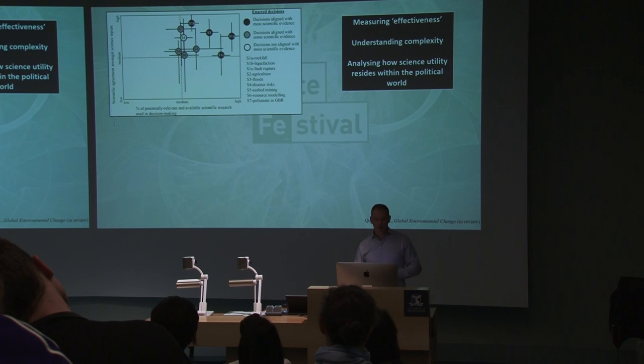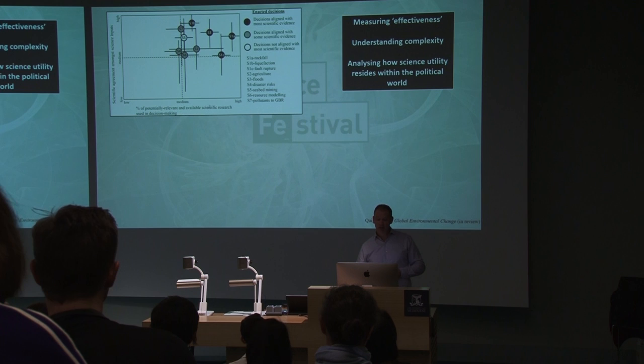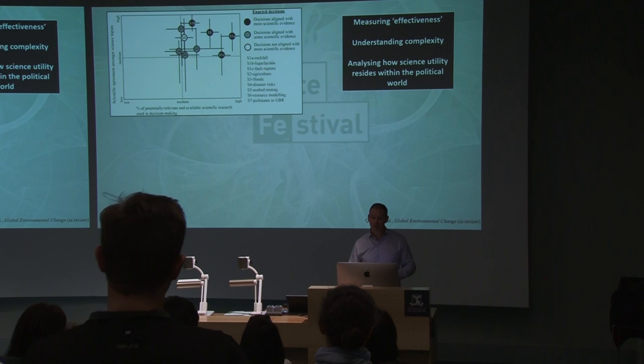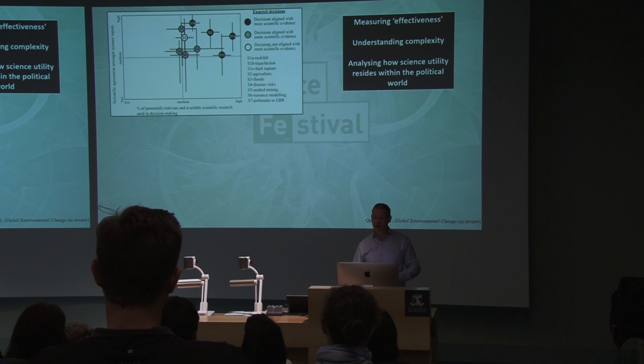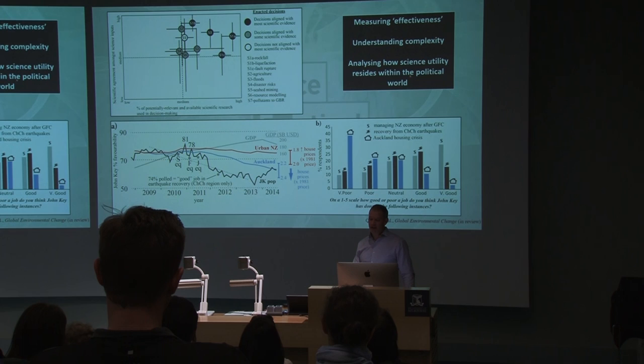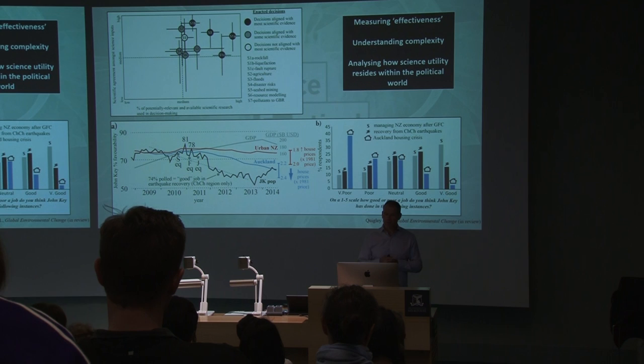This plot shows on the x-axis the percentage of potentially relevant and available scientific research that was used, as a function of the scientific agreement amongst those inputs. What you'll notice is that sometimes the decisions align with some scientific evidence, sometimes with a lot of it, and sometimes they didn't align with the prevailing scientific evidence. So it's about measuring effectiveness, understanding complexity, and understanding how science resides in the political world. This is one of my favorite graphs — a graph of John Key's political popularity, the New Zealand ex-Prime Minister, over time.